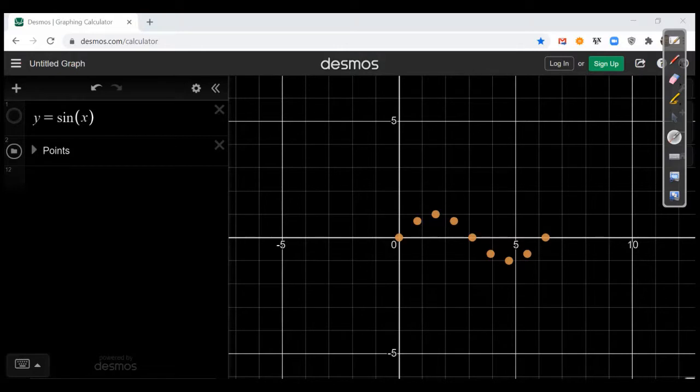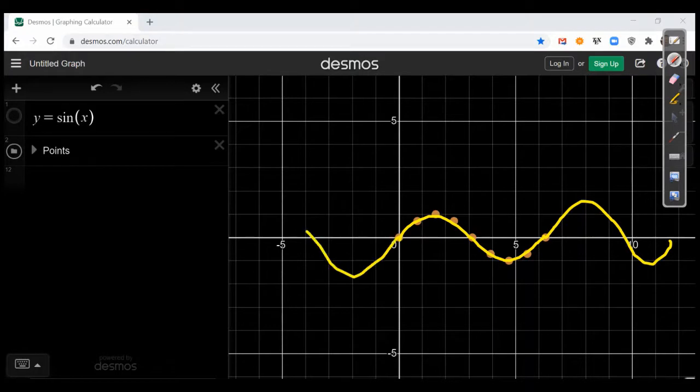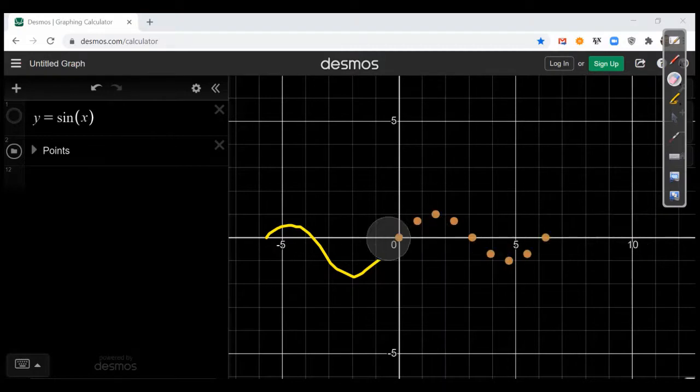So like we saw earlier, if we try to connect the dots, we're going to get a picture that looks something like the following. This is a single period of our function. So we would anticipate that if we were to continue this thing on, we can replicate this picture over and over again. We're going to get this sinusoidal wave.